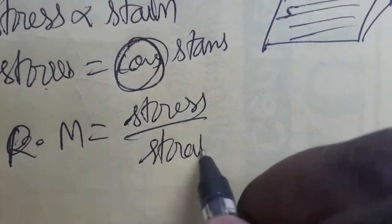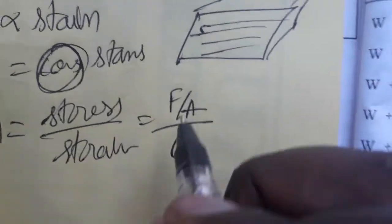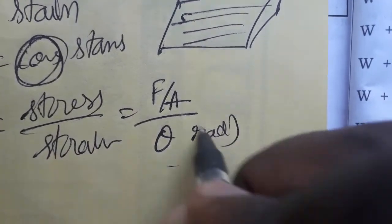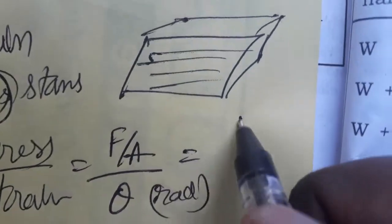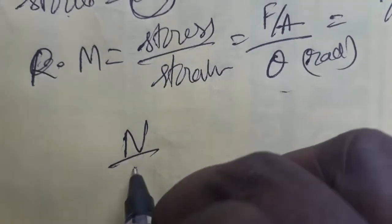Stress is force per unit area, and strain is the angle of changing, which is in radians. Force per unit area is newton by meter square. Newton by meter square, where newton is kg meter second minus 2.